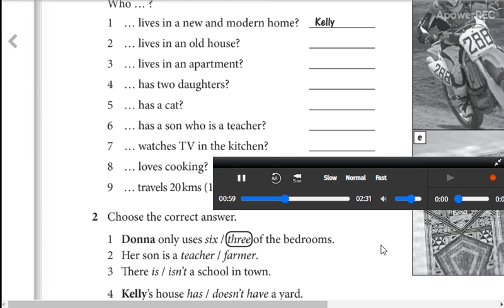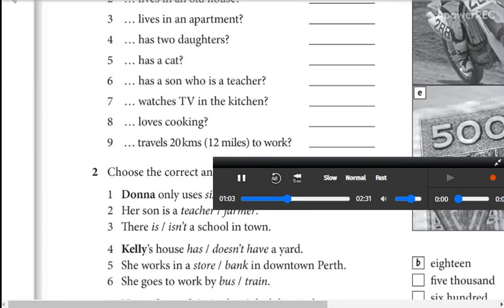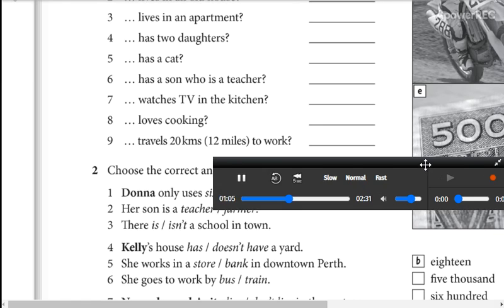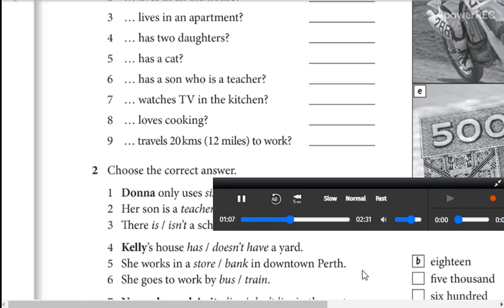Kelly from Perth, Australia. I'm very excited because I have my own house for the first time. It's very new and modern. I have three bedrooms, a big living room and kitchen, and a small yard. I love it.